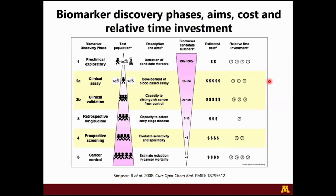Speaking of biomarker discovery and development — what does this pipeline look like? The first phase is what we term the preclinical or exploratory phase. These studies are often done in vitro or in patient-derived xenograft models. The goal is to detect candidate biomarkers — upwards of 100 to thousands of candidates. As you move along this pipeline, the test population changes, the aims change, and the number of biomarker candidates should decrease. Each step involves significant costs — financial and time — so it's really important to design these studies very carefully.